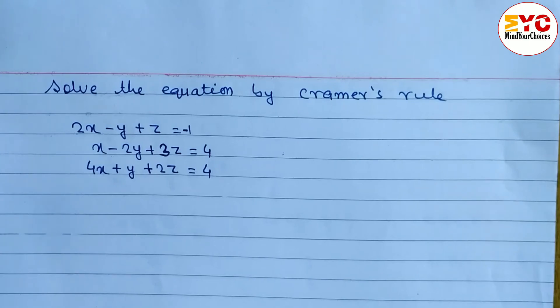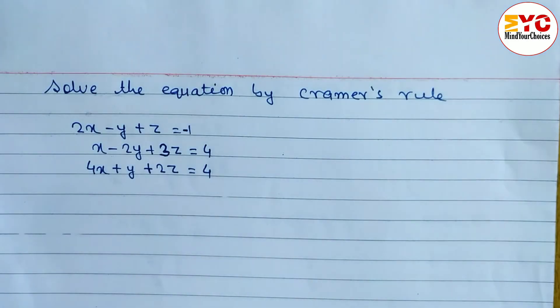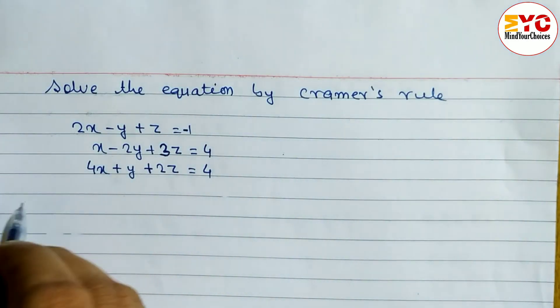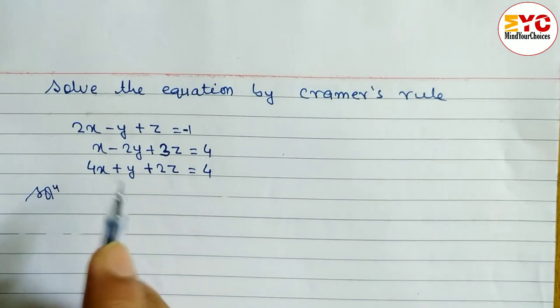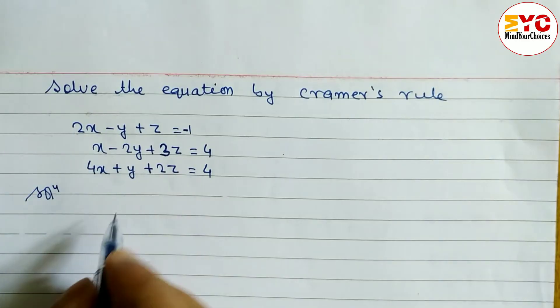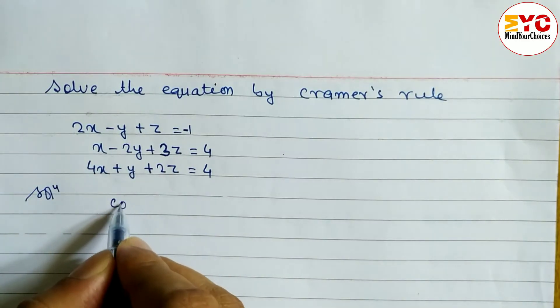Hello everyone. In this video we will learn how to solve equations by using Cramer's rule. We have a 3x3 square matrix. So let's take a start — we have three equations.